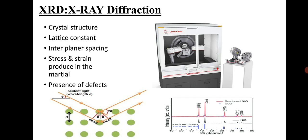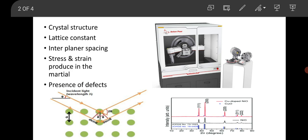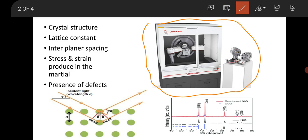First of all, XRD stands for X-ray diffraction, as you know. This is a basic fundamental technique in order to know the crystal structure of the material. It depends upon Bragg's law, and there is diffraction depending upon the planes available on the crystal. For constructive interference, you get a peak on the XRD which indicates the crystal orientation and different plane orientations in the material.